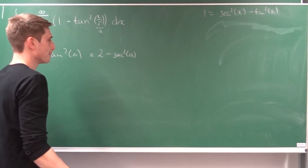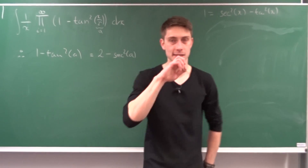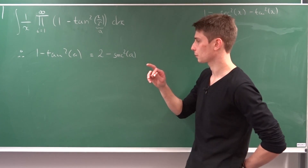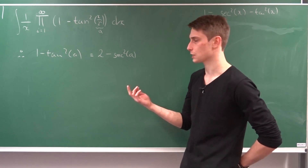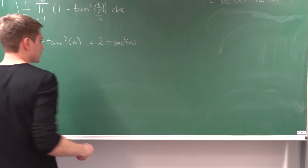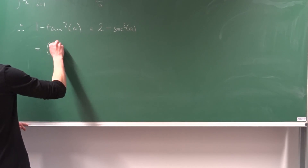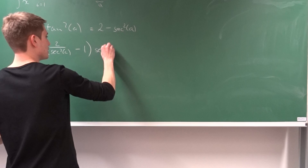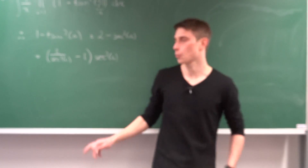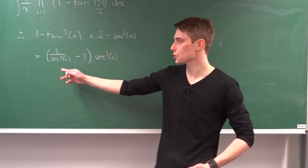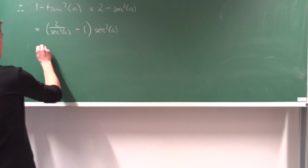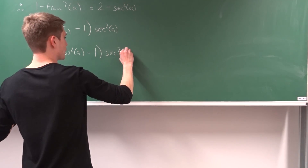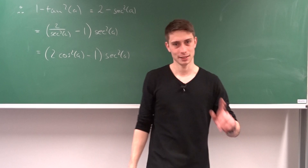So this is also equal to two minus secant squared of a. Remember, secant is nothing else than one over cosine of the argument. To get cosine itself, we could factor out secant squared of a, giving us two over secant squared of a, minus one, times secant squared of a. Since one over one over cosine squared is just cosine squared, this simplifies to two times cosine squared of a minus one, times secant squared of a.